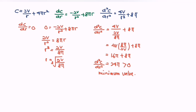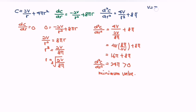The question asks us to find h and r in terms of V such that the cost is minimum. We have established that r = ∛(2V/8π). Using the cylinder formula V = πr²h, we state h in terms of V and r: h = V/(πr²). Now we substitute the minimum value of r.